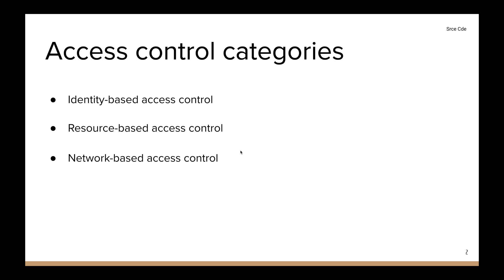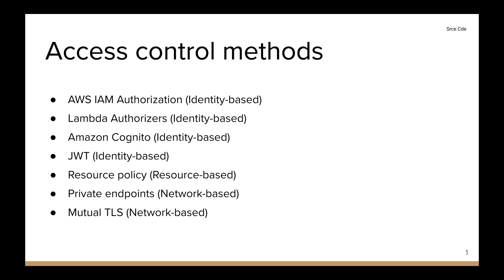The access control methods supported across API gateway are: AWS IAM authorization, Lambda authorizers, Amazon Cognito, and JWT — these four fall under identity-based access control. Resource policy falls under resource-based access control. Finally, private endpoints and mutual TLS are network-based access control methods.